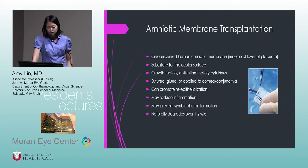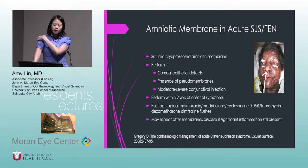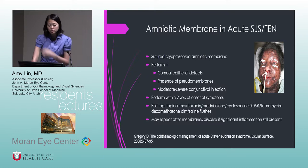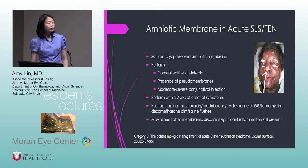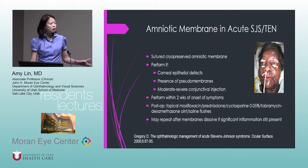The amniotic membrane can be sutured, glued, or applied suture-lessly to certain areas of the ocular surface. It's typically performed if there are corneal epithelial defects, pseudomembranes, or moderate to severe conjunctival injection — perform within two weeks of onset, ideally within one week, because earlier intervention leads to better outcomes. Postoperatively: topical antibiotics, prednisolone or Restasis, Tobradex ointment at night, and q8h saline flushes to clean the ocular surface.